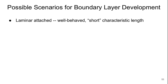So there's a few possible scenarios for our boundary layer development. We could have an entirely laminar attached boundary layer. This is a well-behaved boundary layer on an object with a short characteristic length.